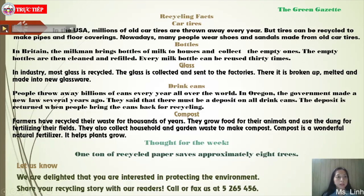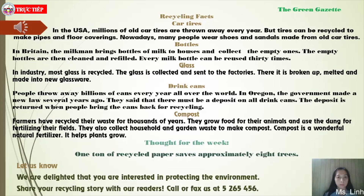Now listen carefully. Read: Recycling Facts. Car tires: In the USA, millions of old car tires are thrown away every year. But tires can be recycled to make pipes and floor coverings. Nowadays, many people wear shoes and sandals made from old car tires. Bottles: In Britain, the milkman brings bottles of milk to houses and collects the empty ones. The empty bottles are then cleaned and refilled. Every milk bottle can be reused 30 times.